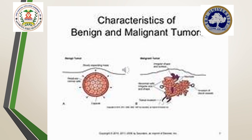The next criteria is pleomorphism, which means variation in the size as well as the shape of the neoplastic or tumour cell. Benign tumours do not show features of pleomorphism, in contrast to malignant tumours where pleomorphism is often present. The next criteria is the NC ratio — the nuclear to cytoplasmic ratio. In benign tumours, the NC ratio is normal, averaging 1:4 to 1:6. In malignant tumours, the NC ratio is increased, and sometimes there could be a reversal of the ratio.